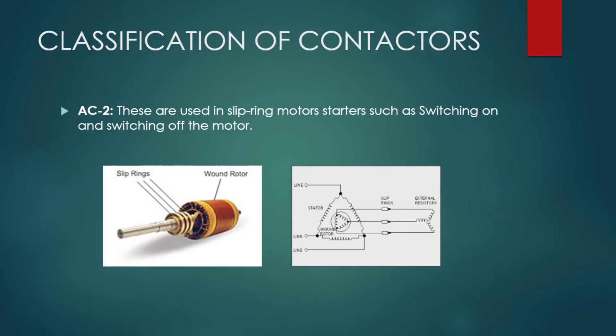The AC2 contactor is mainly used in slip ring motors, such as starters involving switching the motors on and off. They are mostly preferred for high torque current applications.